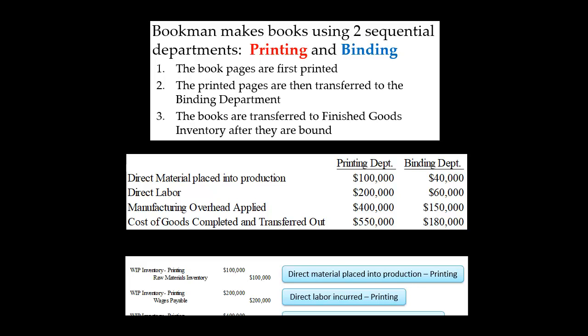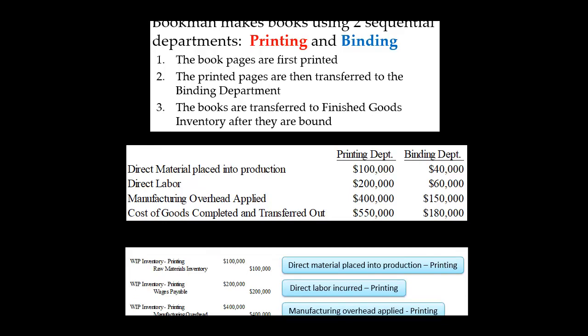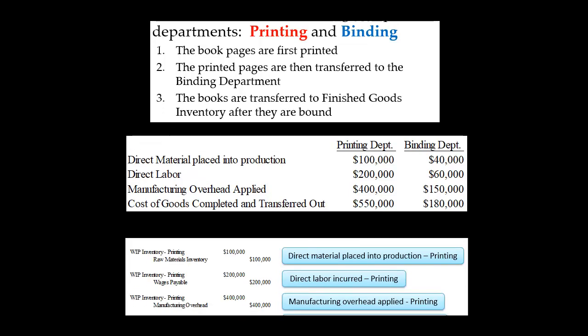When we apply manufacturing overhead in the printing department, we're going to debit work in process inventory for $400,000, and then credit manufacturing overhead.